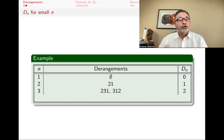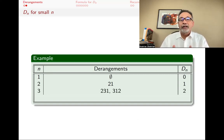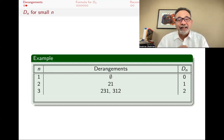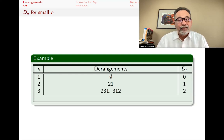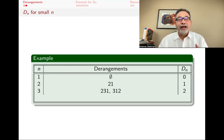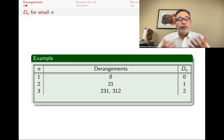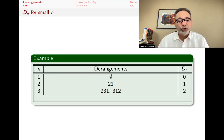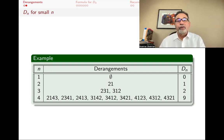With three, there's two derangements: 2-3-1 or 3-1-2. With 2-3-1, that means person one gets the second person's hat, person two gets the third person's hat, and person three gets the first person's hat — nobody's getting their own hat back again. So 2-3-1 or 3-1-2 are both derangements, those are the only ones. D_3 is 2. D_4, there's already many more — there's nine of them. You can check that these are all the derangements: 2-1-4-3, 2-3-4-1, and so forth.